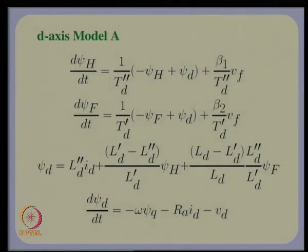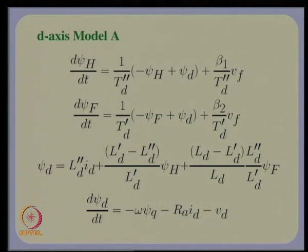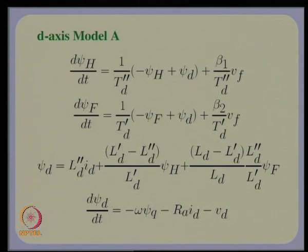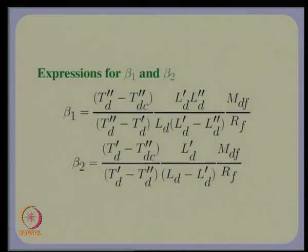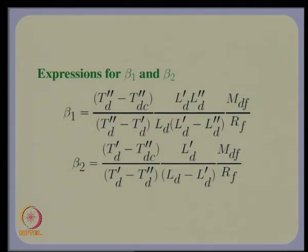Model A is completely in terms of the standard parameters — there is no back calculation involved; you can directly use this model. In so far as the effects on the stator are concerned, you can use Model A in spite of the fact that the rotor fluxes — psi uppercase H, uppercase F, uppercase G, and uppercase K — are not the same as the original flux variables. This is still a valid state space model in the sense that you get the same transfer function relationship between psi_d and i_d, and between psi_q and i_q. The relationship between psi_d and V_f is also maintained. However, if somebody asks what the ampere value of the current in the field winding is, this question cannot be answered because the exact relationship between these uppercase-subscripted psi and the original rotor fluxes is not given — with the given data, it is not possible to get that.